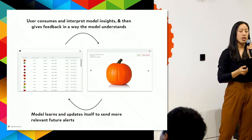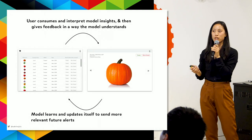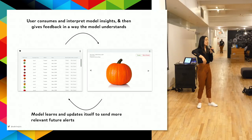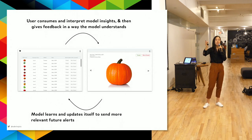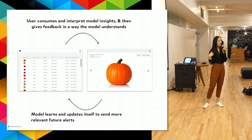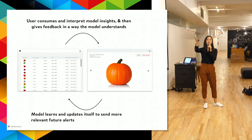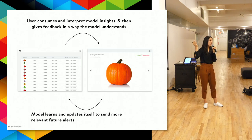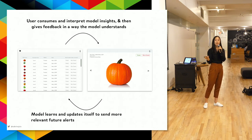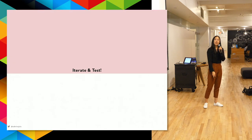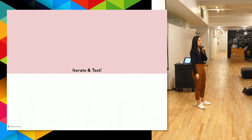Finally, putting it in the context of model training: in the middle of the Venn diagram, she can consume and interpret model insights and do her job. She knows what's not shown on screen — correctly identified tomatoes — and we get 'tomato / not a tomato' feedback from her, completing the feedback loop.